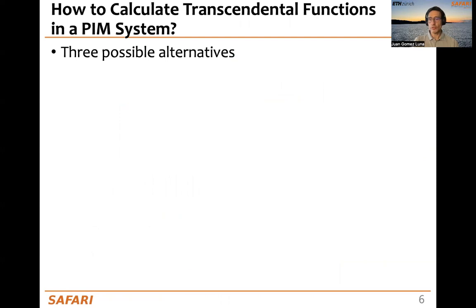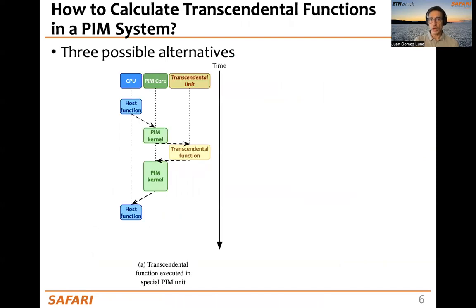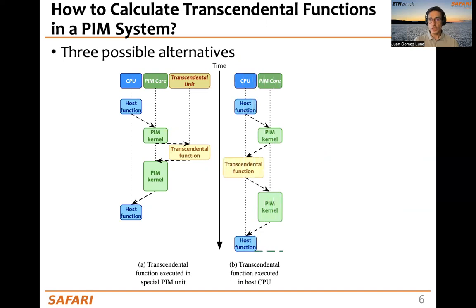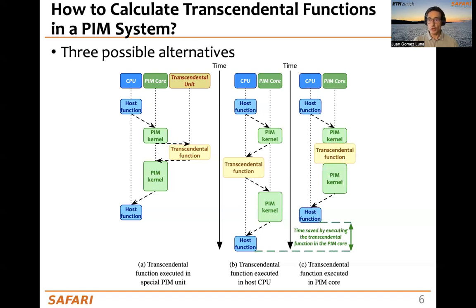How can we calculate transcendental functions in a PIM system? There are three possible alternatives. The ideal one would be to have a special transcendental unit in the memory side that calculates the transcendental functions. However, this is unrealistic because of the limited hardware availability in PIM systems. A more realistic scenario could stop the PIM kernel execution, move data to the CPU to compute the transcendental function, and then return control to the PIM kernel. The problem is that this involves data movement between memory and the CPU back and forth.